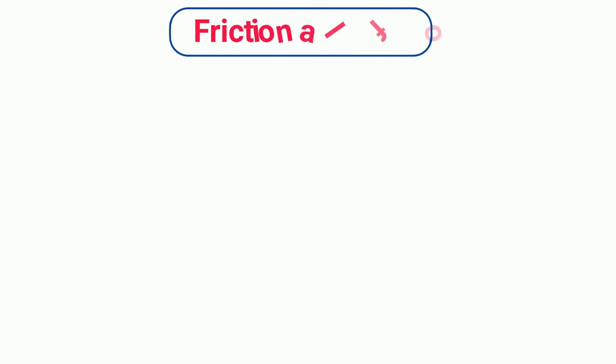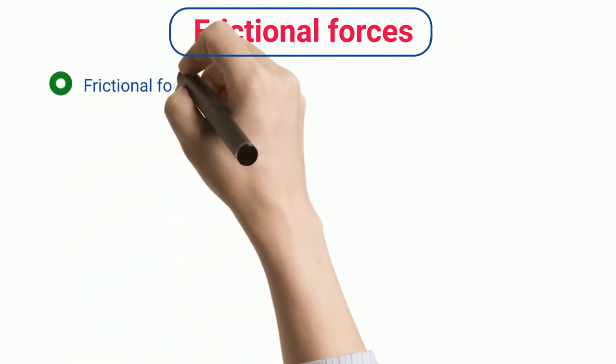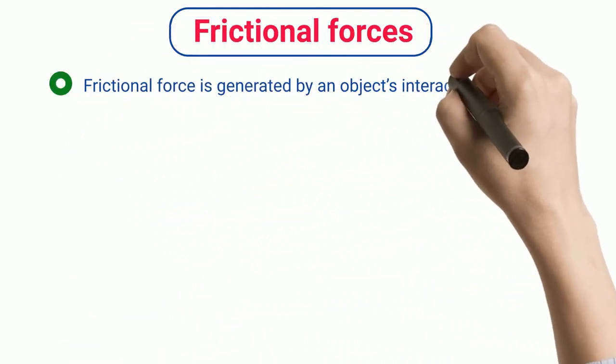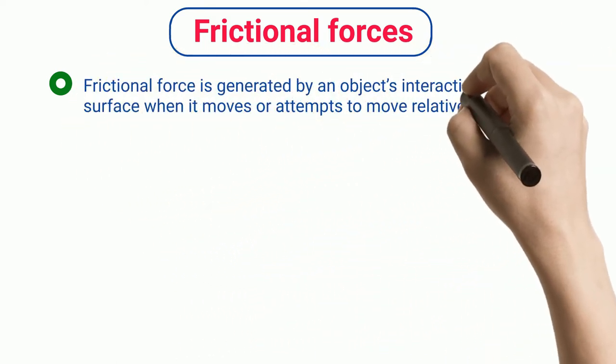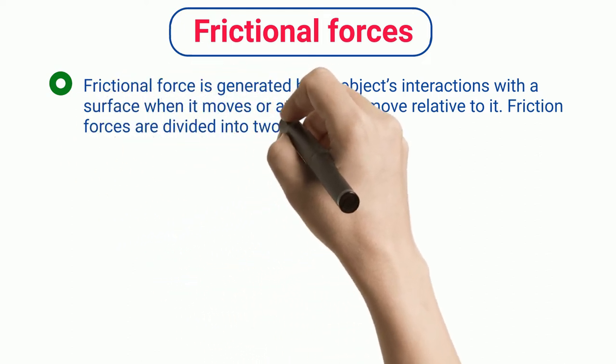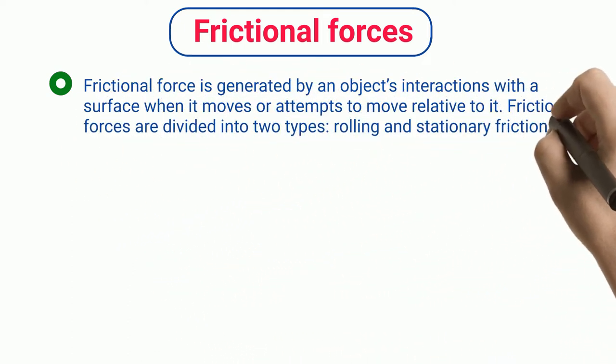Frictional force is generated by an object's interactions with a surface when it moves or attempts to move relative to it. Friction forces are divided into two types: rolling and stationary friction.